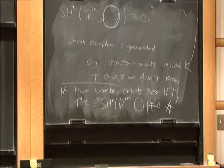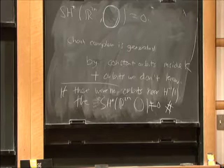The nearness is controlled by how steep the slope of the Hamiltonian is — you can make the orbits as near to H^{-1}(C) as you wish by making the slope as steep as you like.